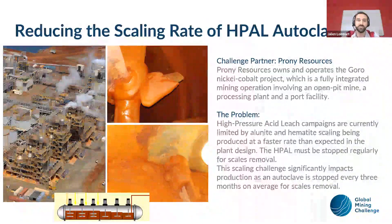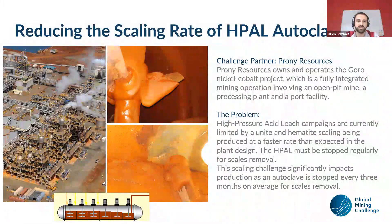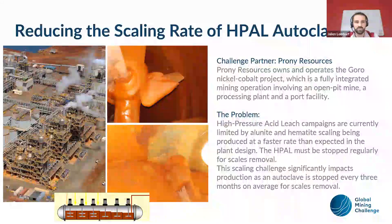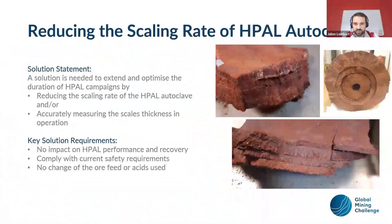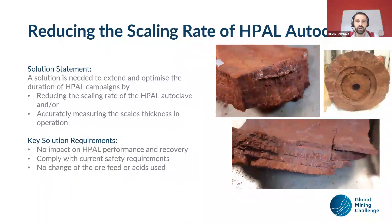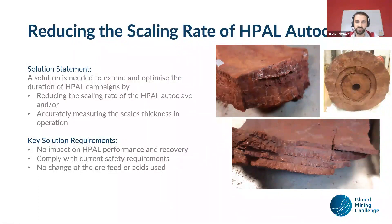The other goal is to find a solution to reduce the scaling rate or to spread the scaling across other compartments of the autoclave, which would be very interesting. Here you have some examples of the crust we have in the autoclave — it is hematite and alunite, a really hard crust. We need to remove it by high water pressure, and it is very hard to remove. Being able to reduce the thickness or measure it during operation would be a very good solution.